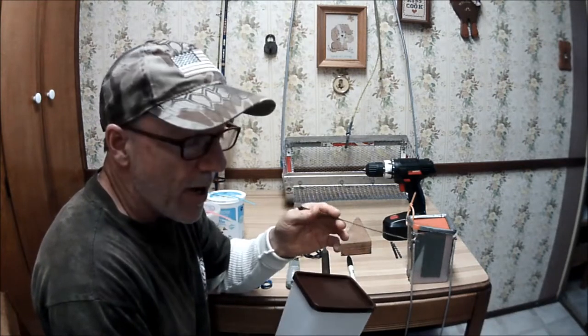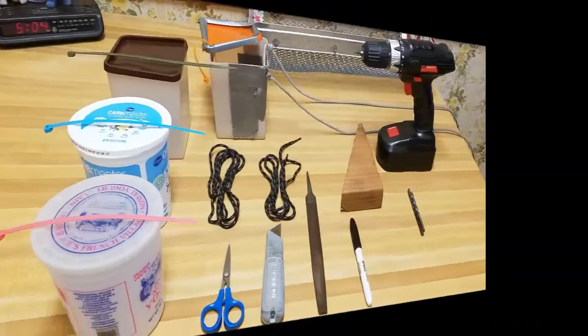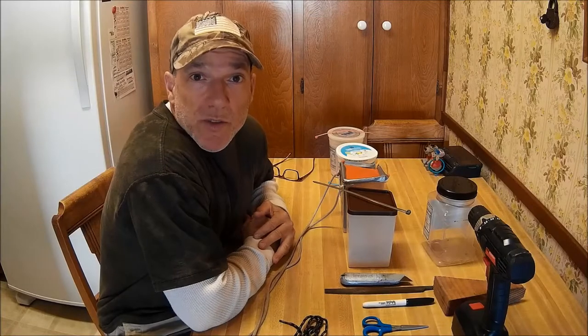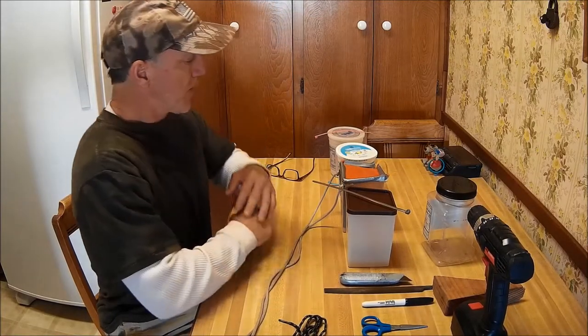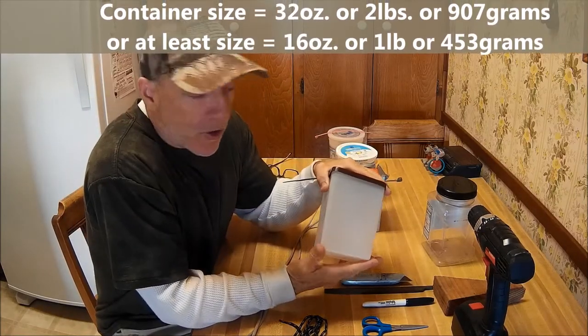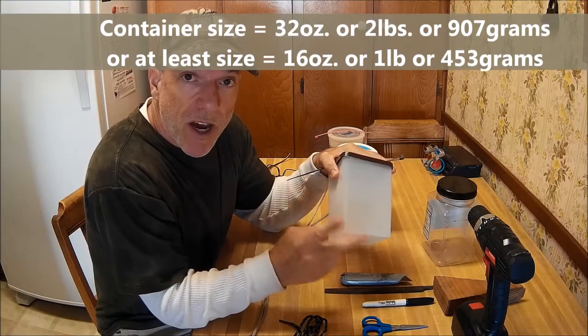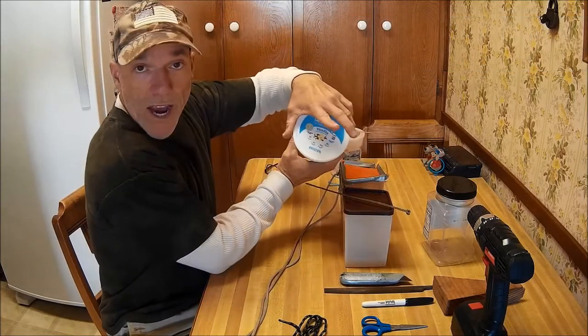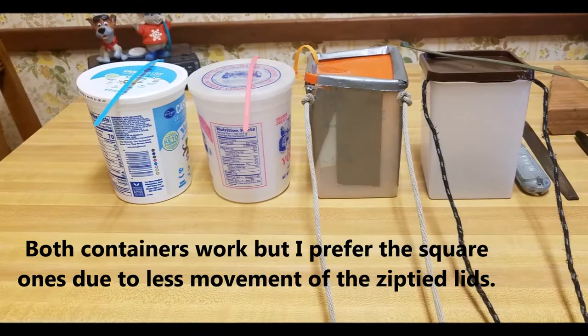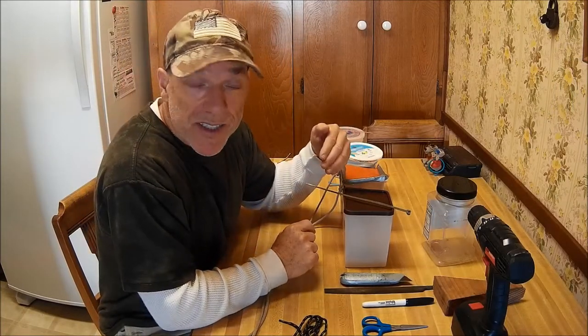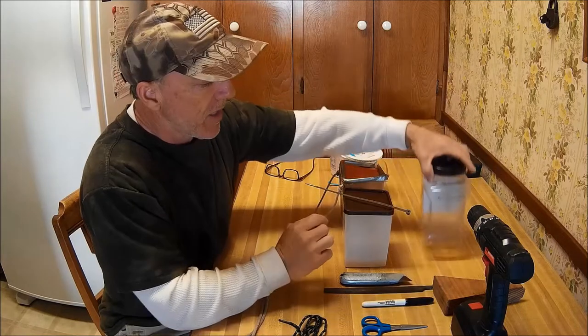I'm going to show you how I make my own sand crab bait holder container. Let's get into container selection. All of these are lightweight plastic. The size I prefer is 32 ounces, two pounds or 907 grams. These are square, these are round, it doesn't matter, but they are all pop top lids as opposed to the screw on lids.